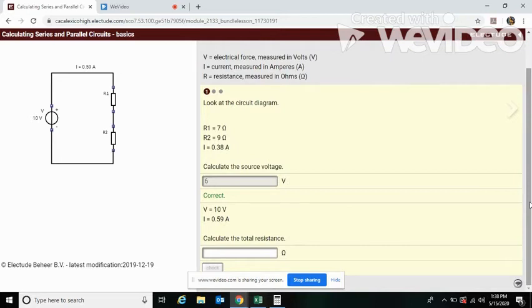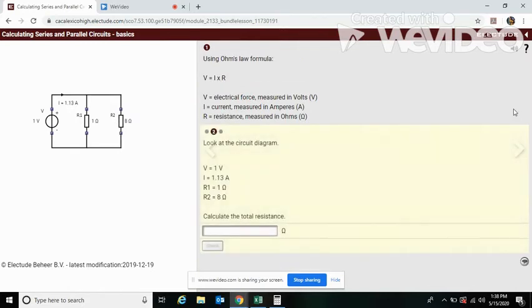Now I would like for you to do this bottom one here. These formulas will change on your screen but this is just the basic form. Now it's not in series anymore, we're in parallel. You look at this circuit, we have our battery with one volt, our current is 1.13 amperes, resistance through here is 1 ohm and resistance through here is 8 ohms.